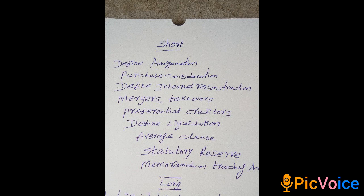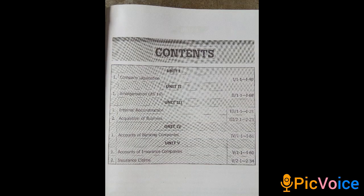What are the methods of winding up of the company? Next, average clause in fire insurance claims. Also, statutory reserve in bank accounts — every bank has to transfer 25% of their current year net profit to a mandatory reserve, which is known as statutory reserve.